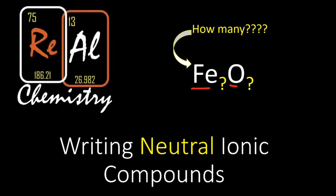Anytime you write an ionic compound, it has to be neutral. So that means if we know the charges on our cation — the positive one — and our anion — the negative one — then we can figure out how many there are of each type.